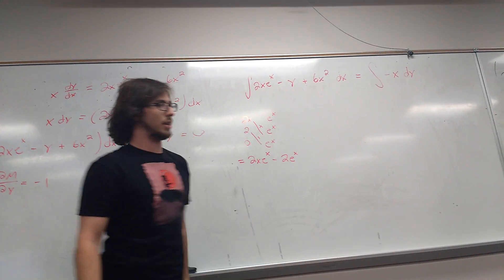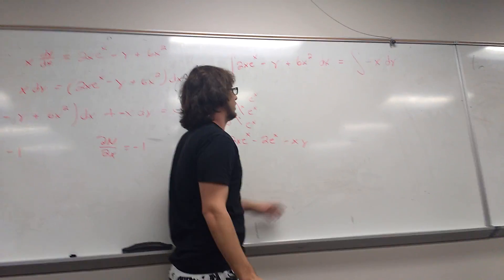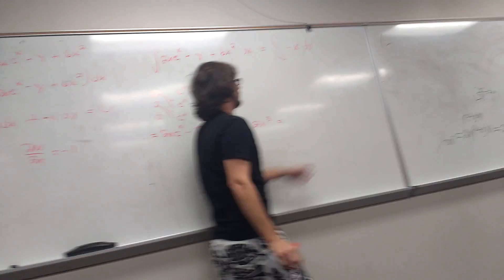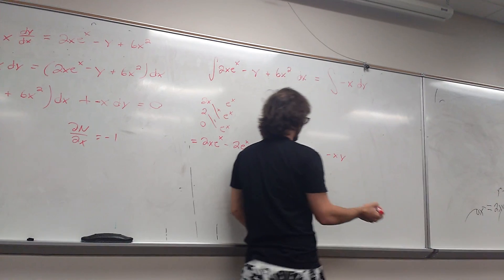So now when we integrate our negative y with respect to x, we get minus xy. And then lastly, when we integrate our 6x squared, we get 2x cubed. And then over here, we just integrate with respect to y, and we just get a negative xy.